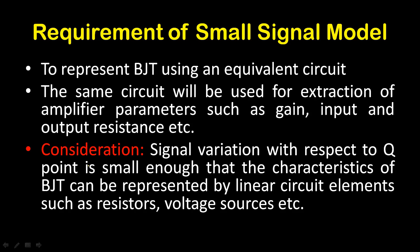Why is small signal modeling required? The main application of BJT is to design an amplifier. To analyze an amplifier — how much gain we are getting from the output, what will be the input resistance, what will be the output resistance — we need one equivalent circuit. By using small signal modeling, we can represent BJT using some linear circuit elements.